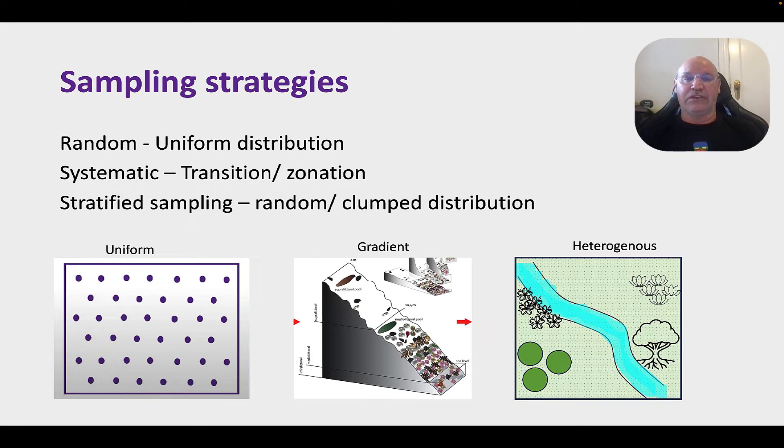So firstly, with the sampling strategies, it really depends on what the ecosystem's like. So you need to understand the ecosystem first. And you'll recognize this diagram from a previous video when we looked at the distribution of an ecosystem. When we have a uniform distribution, we can use random sampling. Now, random doesn't just mean going and measuring whatever you like. It still has a good system behind it, which I'm going to show you in a second.